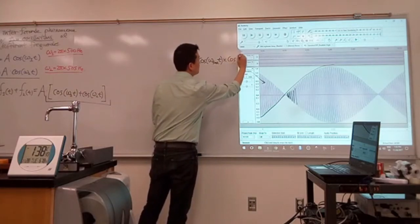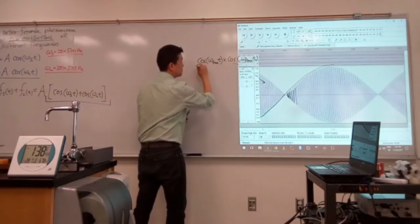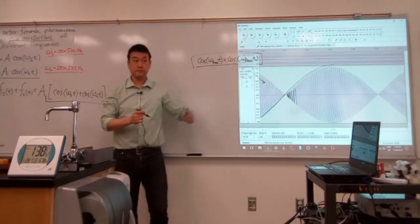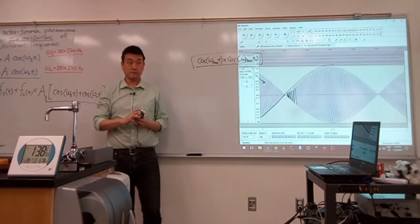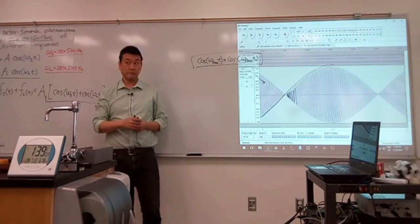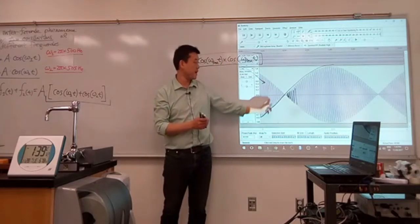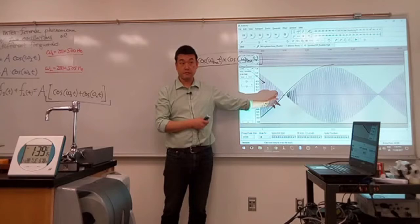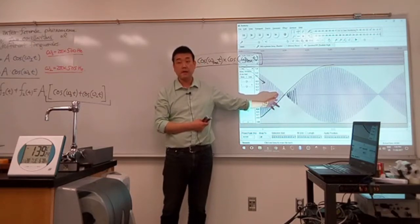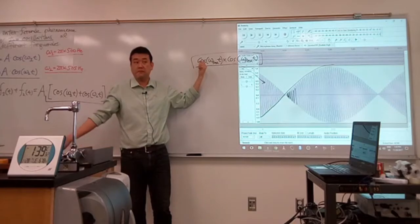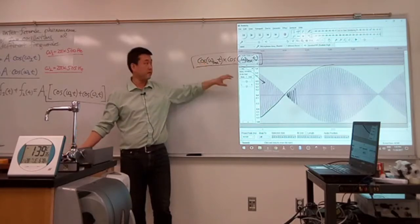Does it make sense that if I wrote down a function in this form, that it does represent this? This is the time-varying amplitude, and this is the faster oscillation inside it. I'm looking for your reaction because the next step is mathematically more complicated. If this portion doesn't make sense, we should stop here and spend as much time as needed — it makes no sense to go into something more mathematically abstract when this doesn't make sense.